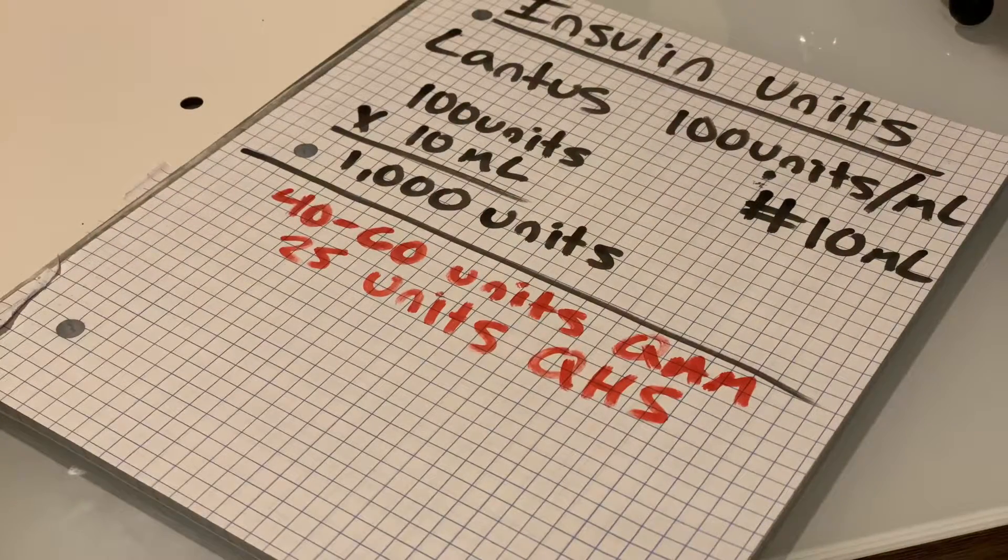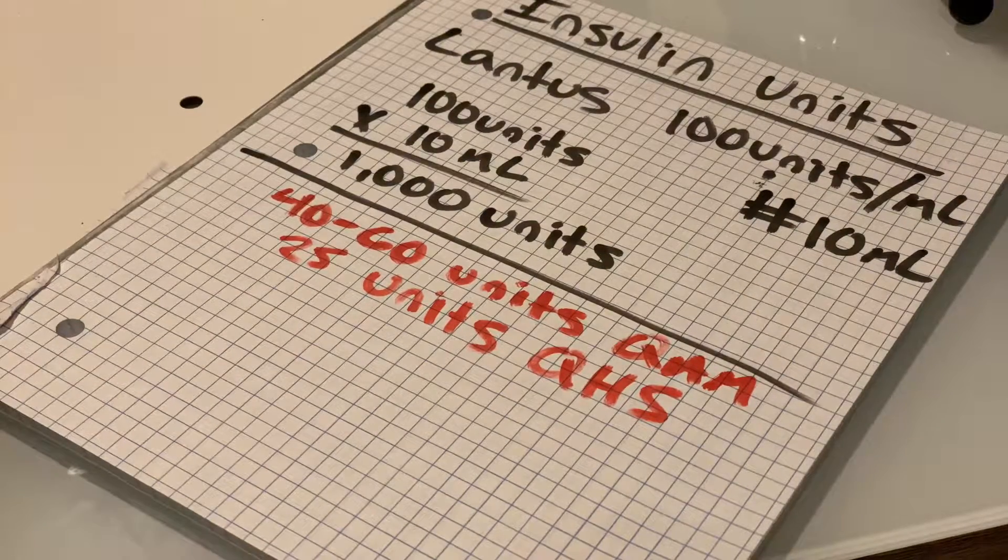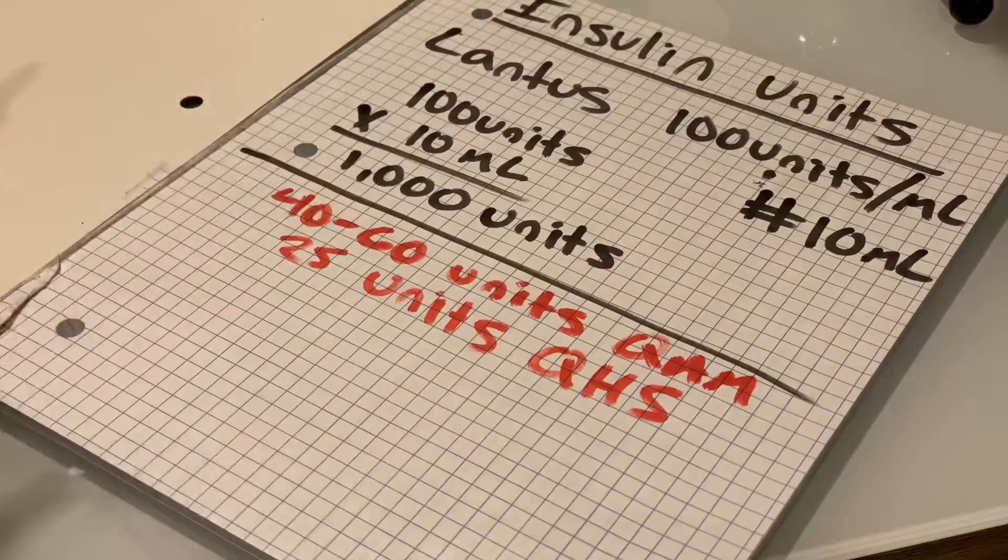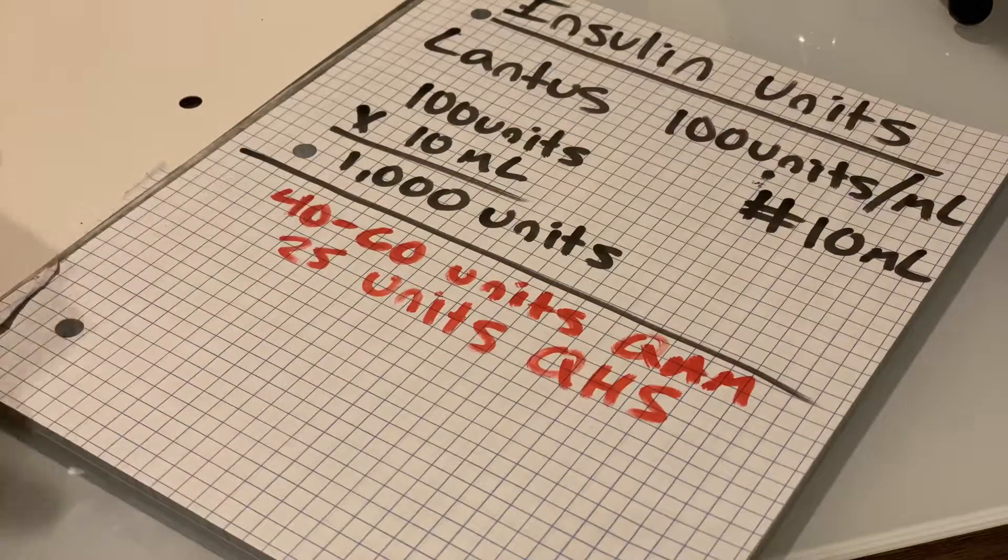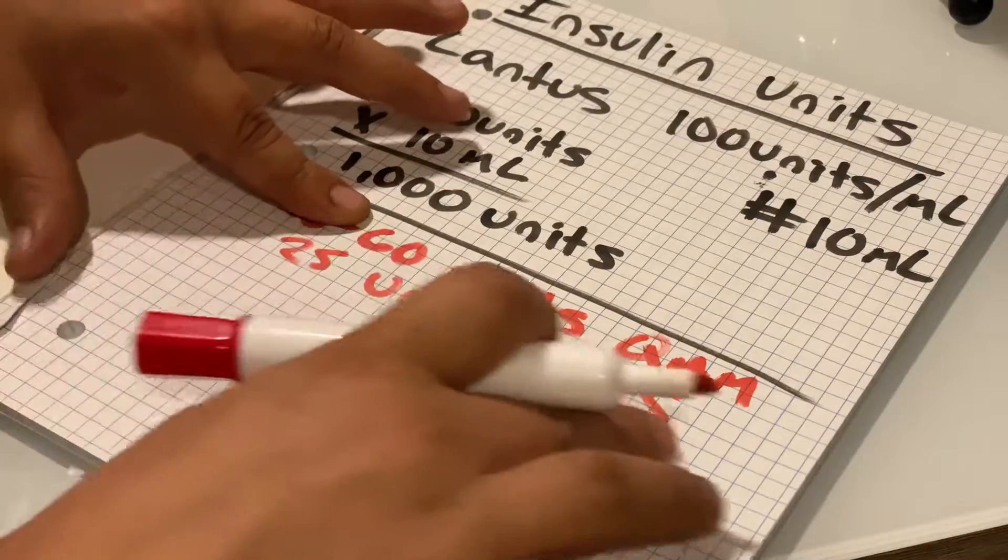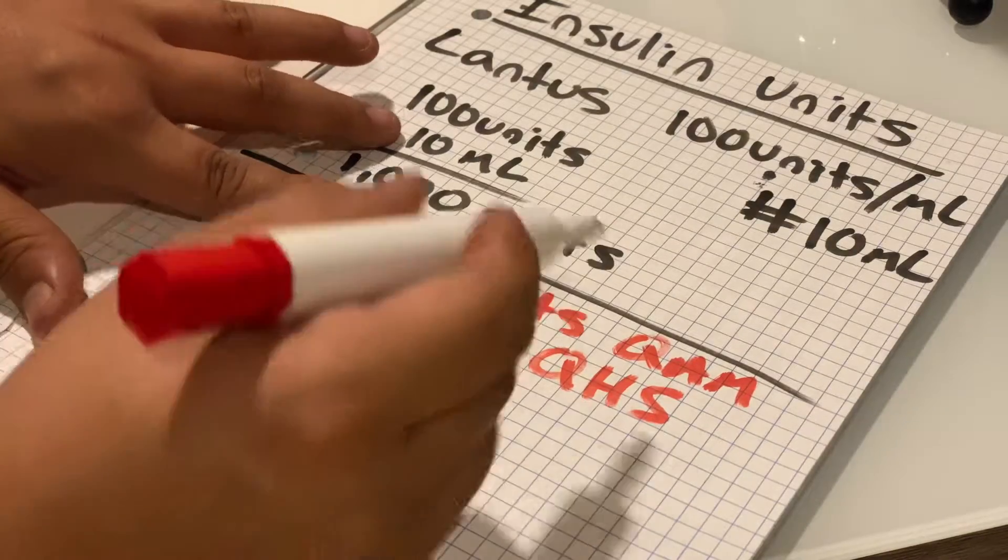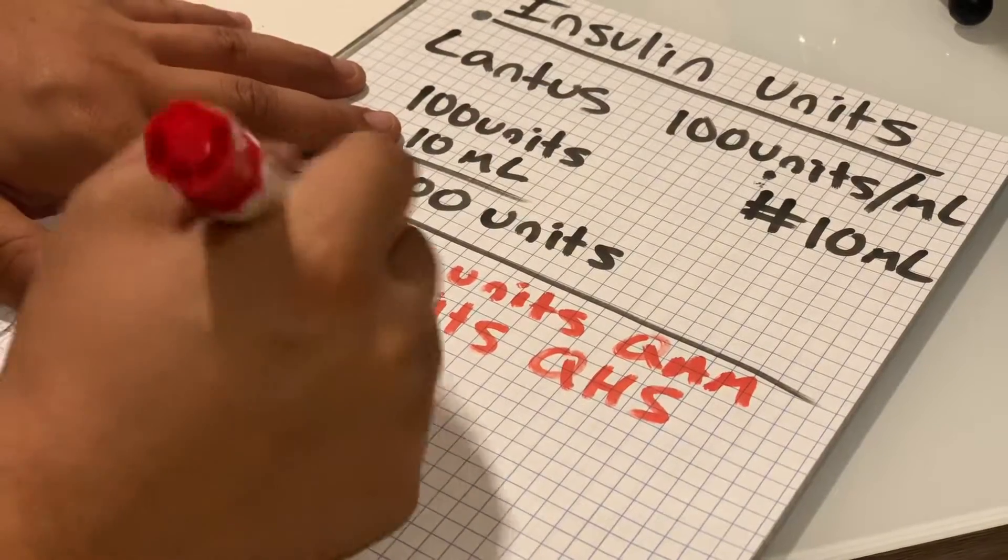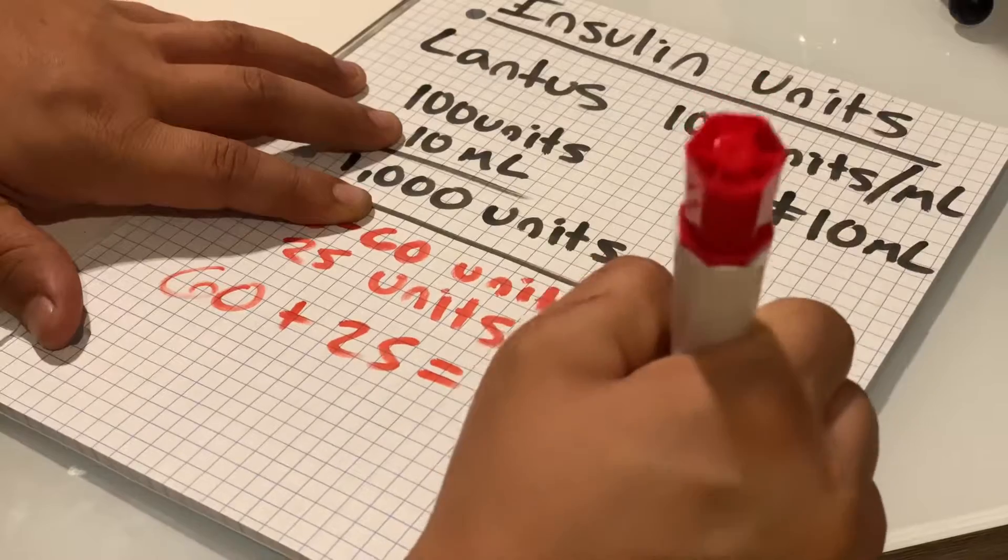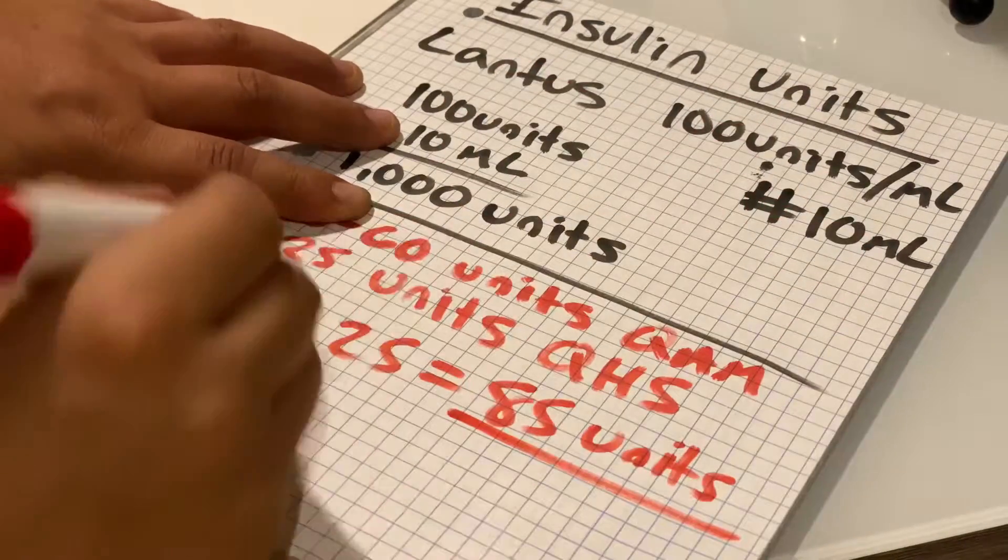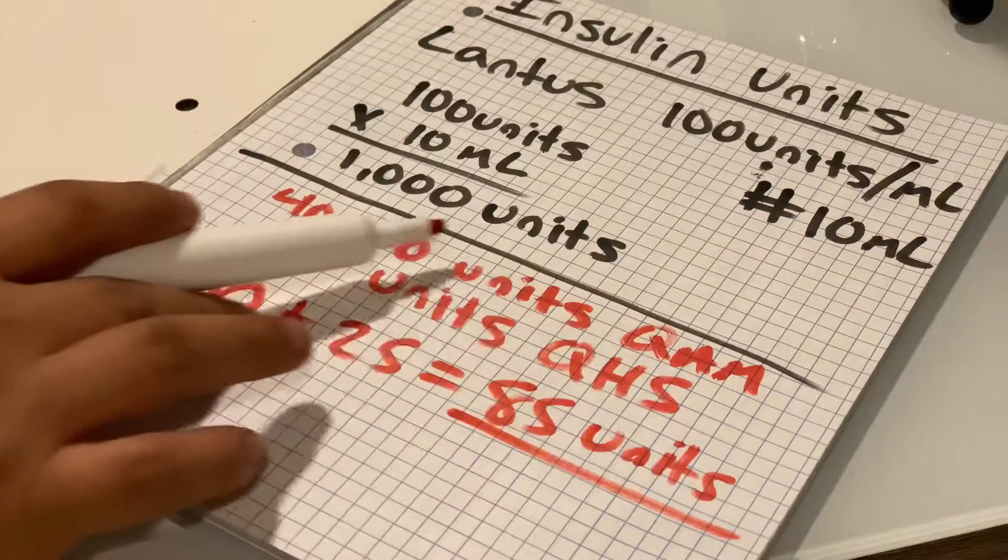Remember, when we're figuring out day supplies, we always have to assume the patient is going to use the most amount of medication. So even though the doctor is saying 40 to 60 units, we always have to assume they're going to use the 60 units. So for sure we're using 60, and then at night they're using another 25. 60 units plus 25 gives you a total of 85 units.